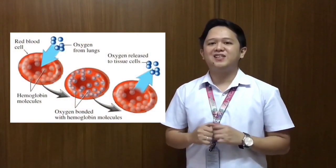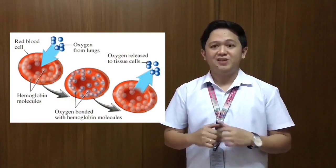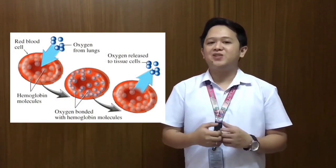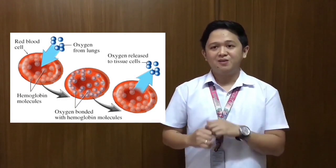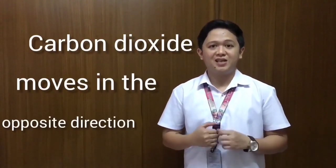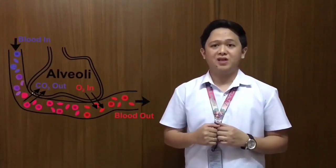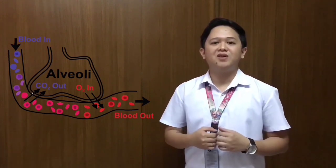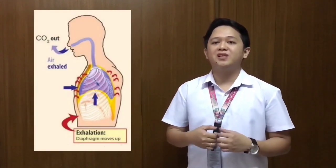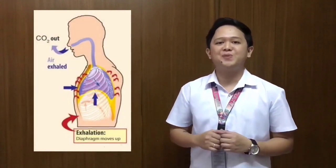The oxygen is then transported by the blood to be released to the tissue cells in the body during internal respiration. Meanwhile, carbon dioxide moves in the opposite direction in the alveoli. Carbon dioxide in the blood crosses capillary walls and then diffuses into the alveoli to be returned to the atmosphere during external respiration.